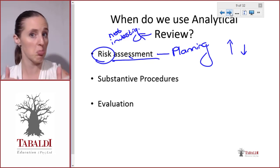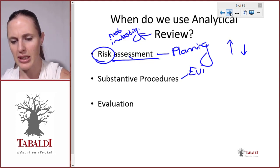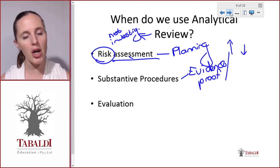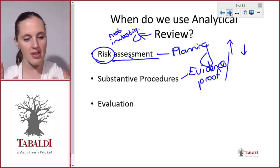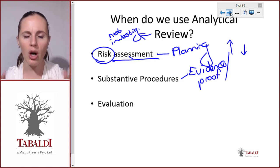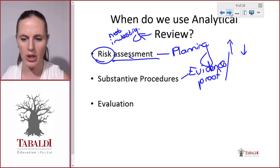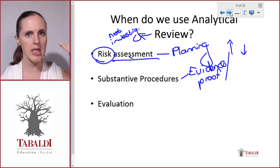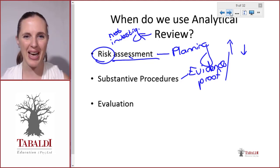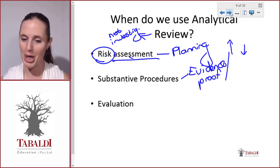We also use analytical review as substantive procedures — tests of detail — which is our evidence or proof. We use it as part of our evidence to prove the fair presentation of the financial statements. I know accountants might think you can't use 'it seems right' as evidence, and we'll go through why you can and how much you can rely on it. It is part of your procedures: recalculate this, inspect this, and perform analytical review. It may not make up all your evidence, but it is part of it.